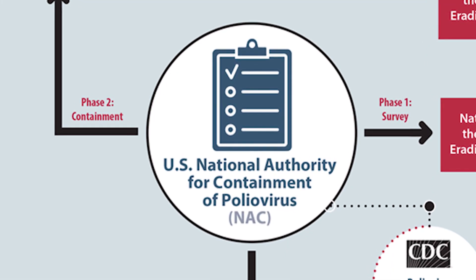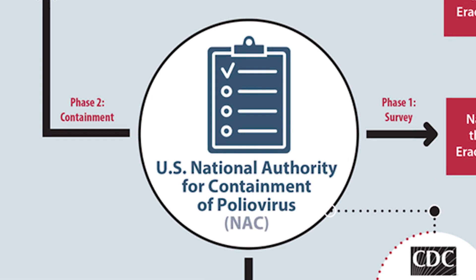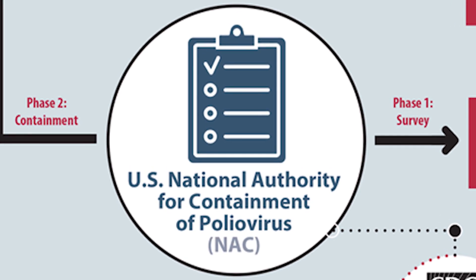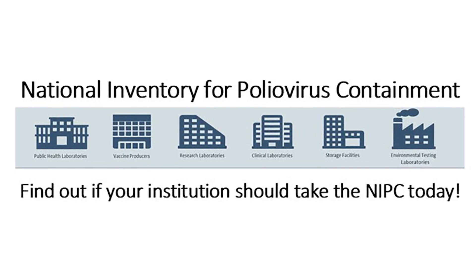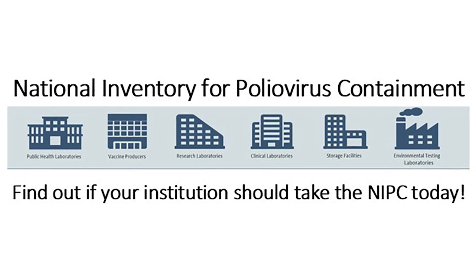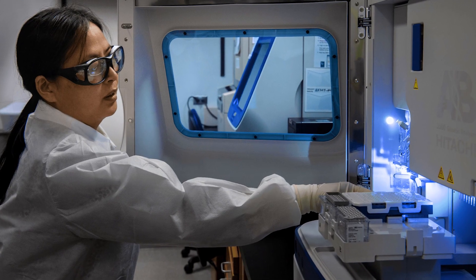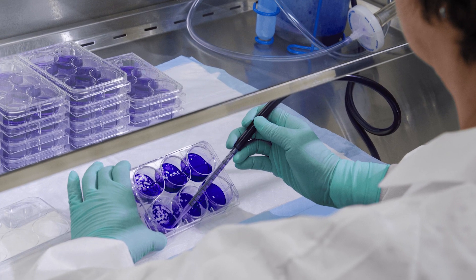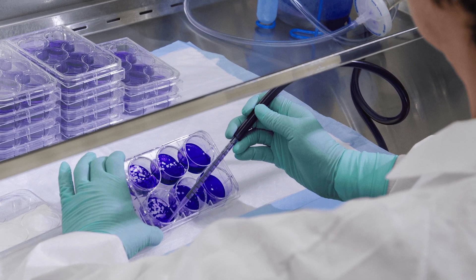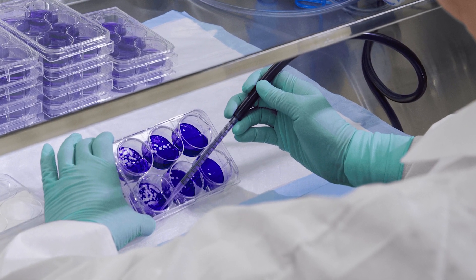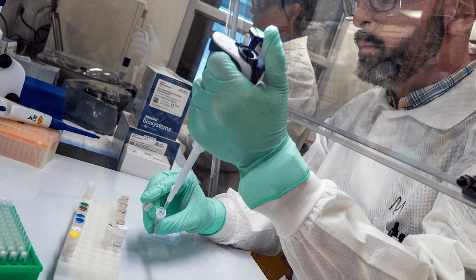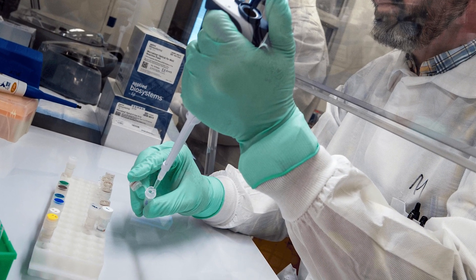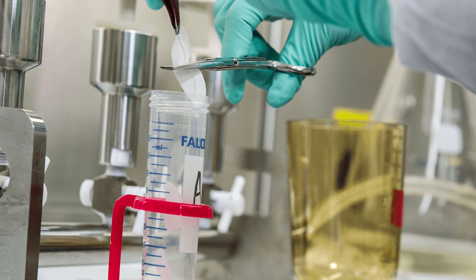The U.S. NAC, headquartered in CDC's Center for Preparedness and Response, has three main objectives. The first objective is to conduct a national survey to identify all facilities working with poliovirus materials and materials potentially infectious for poliovirus, also known as PIM. Materials are considered potentially infectious based on where and when the samples were collected, not based on test results.